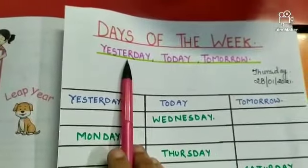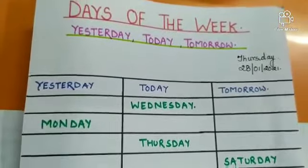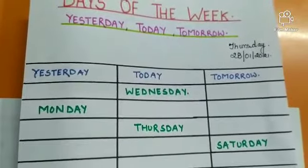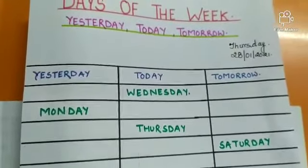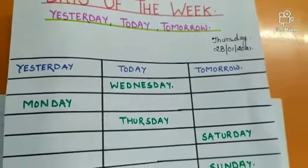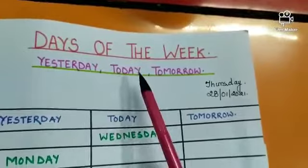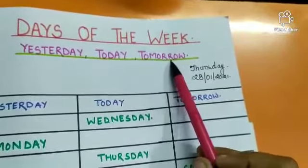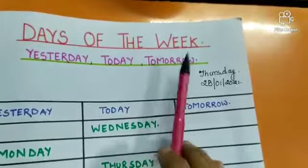Yesterday means the day before today — yesterday ka means the day that has passed, jo day chala gaya hai, woh hota hai yesterday. Today is the present day — jo aaj day hai, the day which is going on is today. And tomorrow is the day after today — tomorrow means aane wala kal.